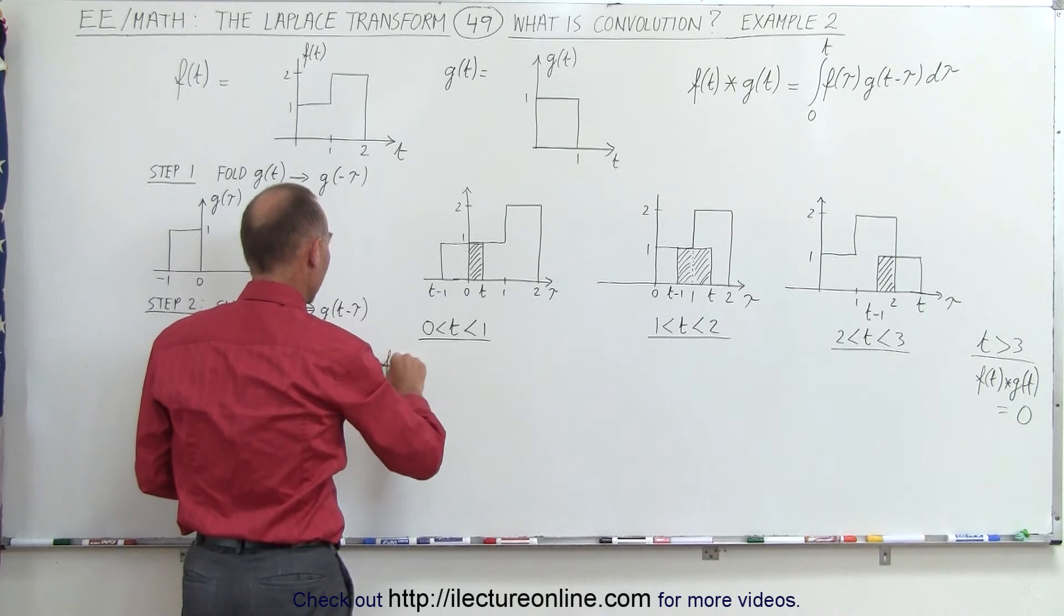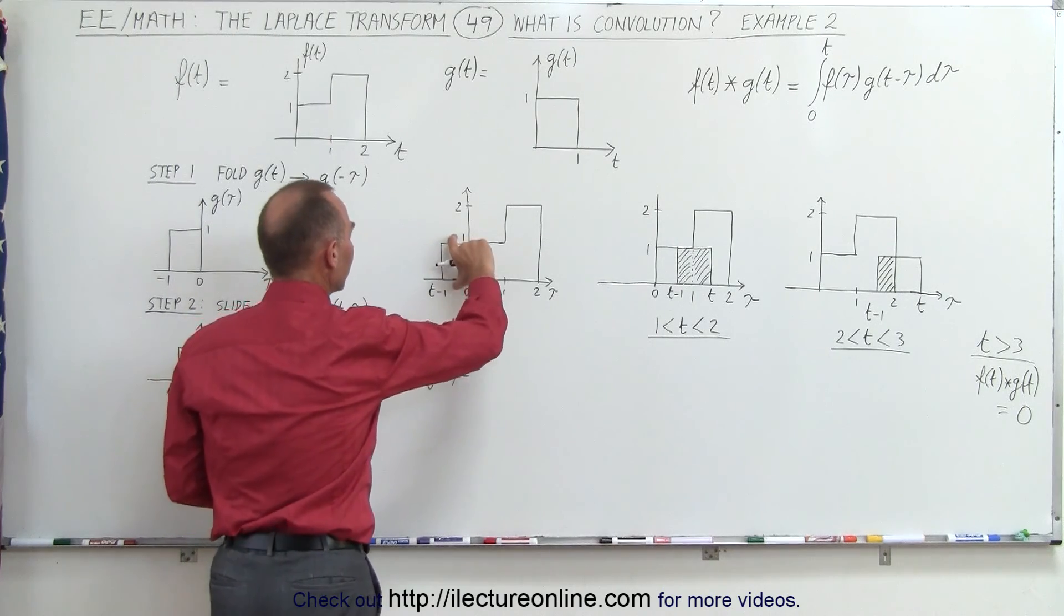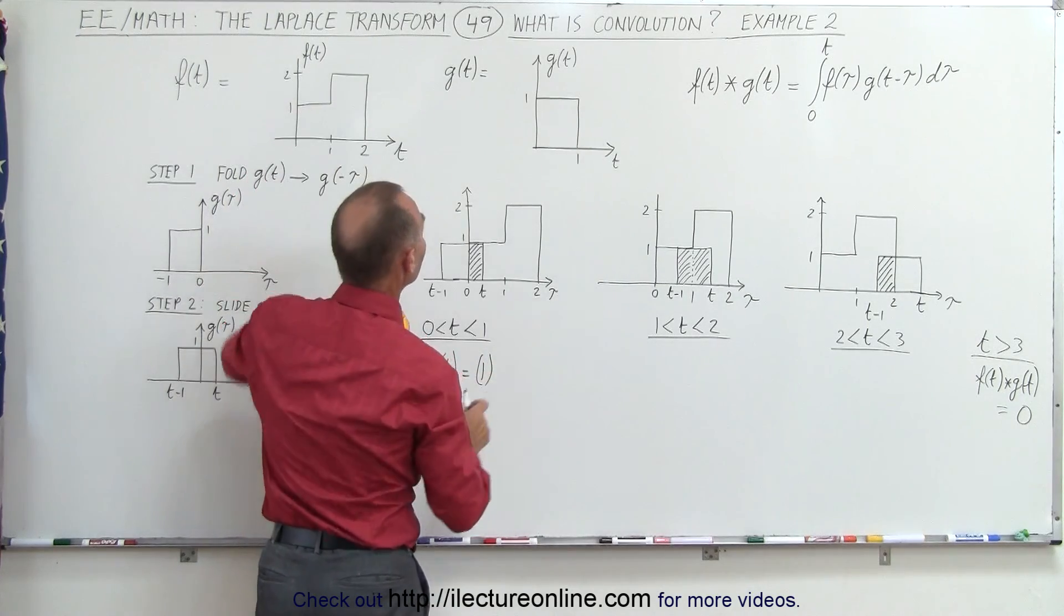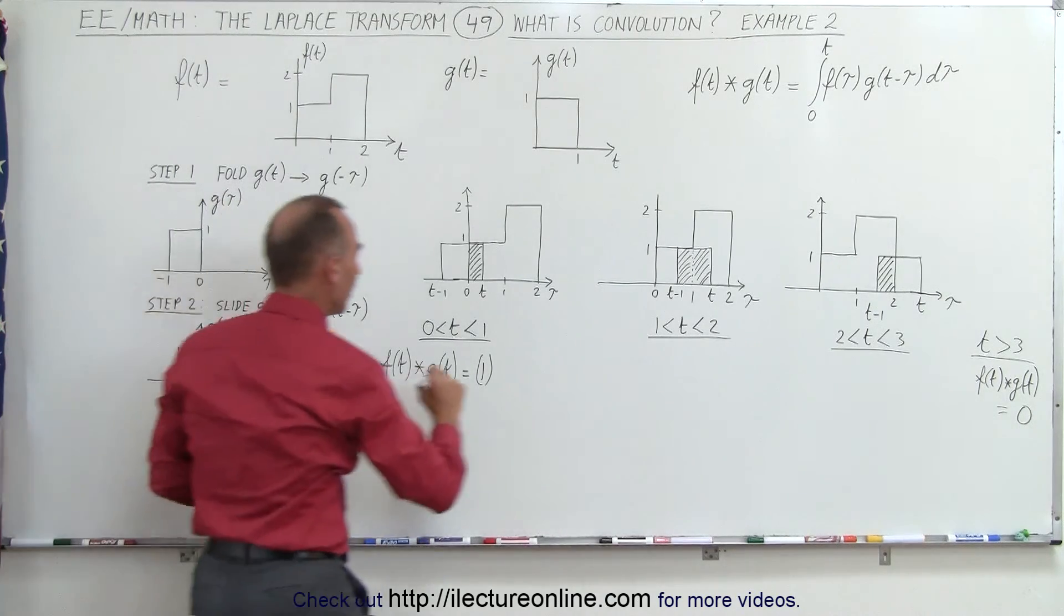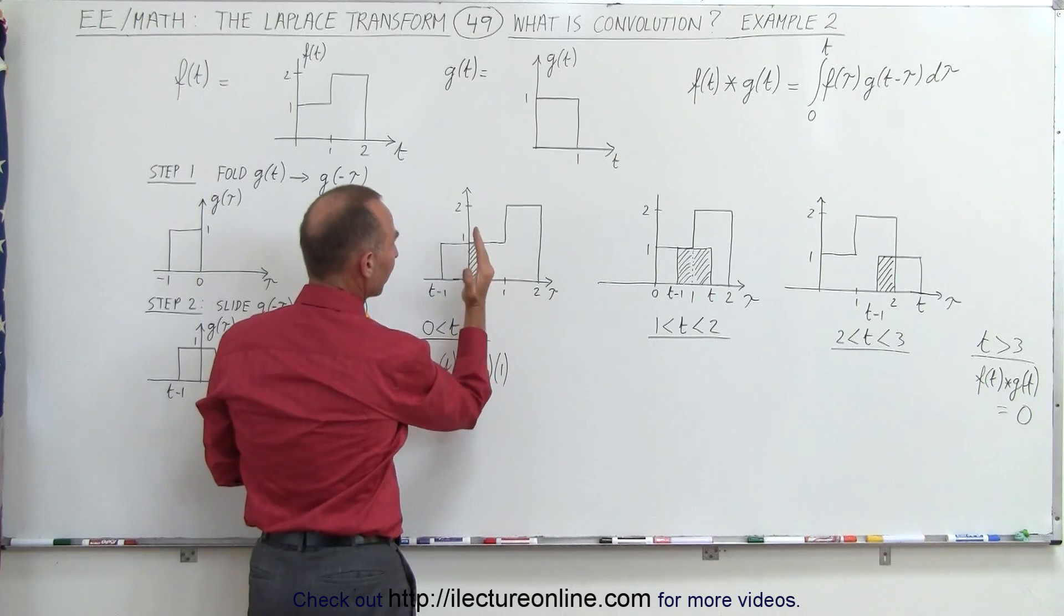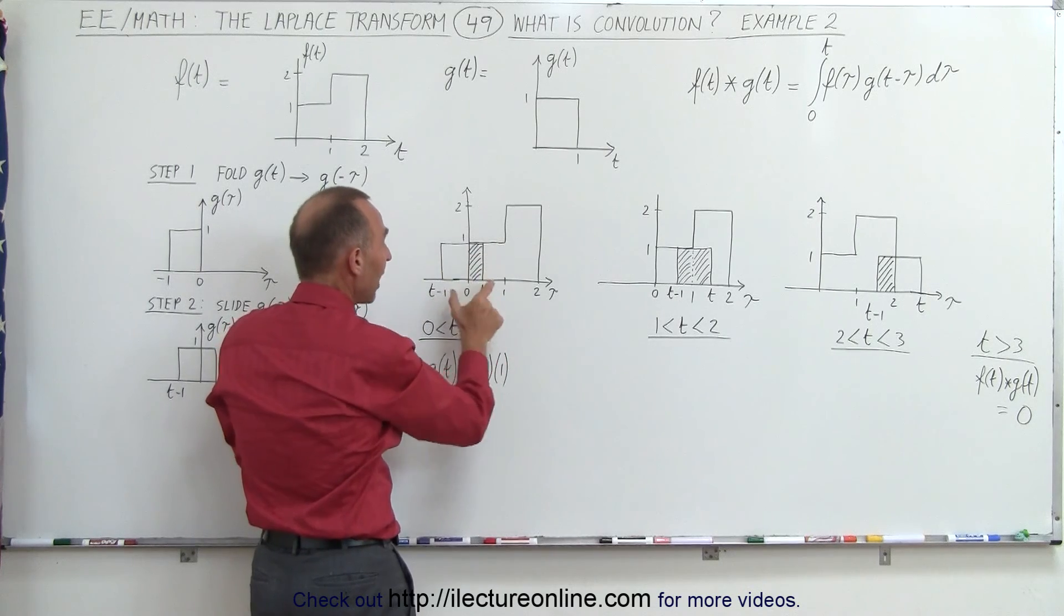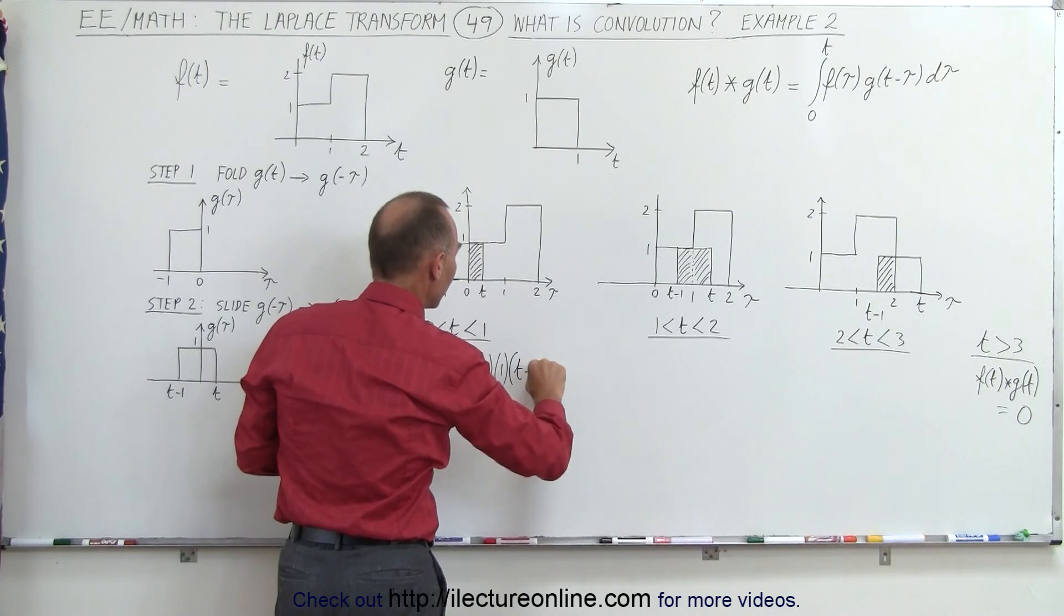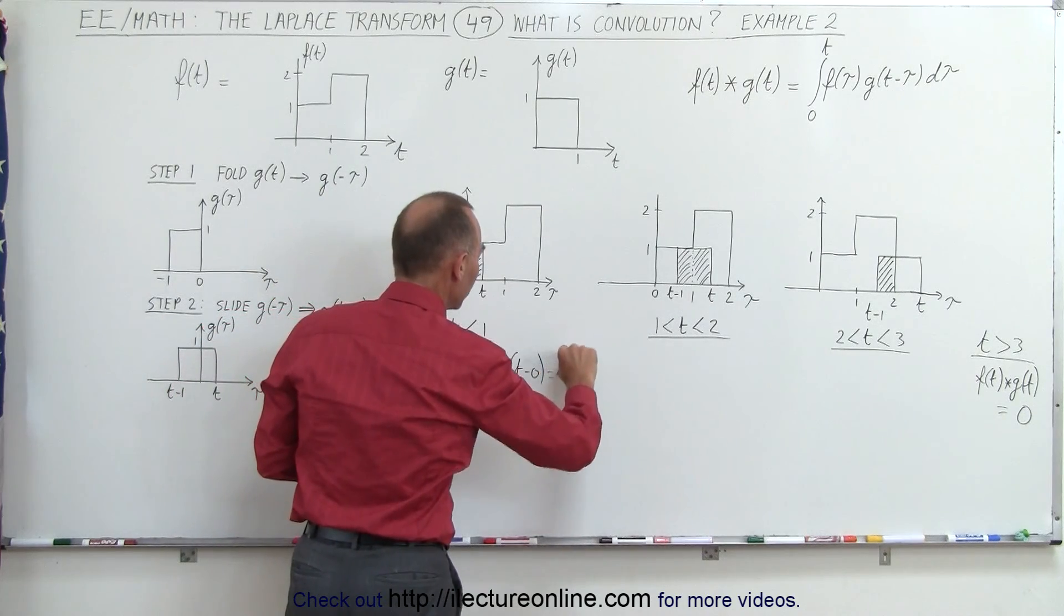So we can say here that f of t convolved with g of t is equal to the height of the first function, which is going to be f of t, which is going to be 1, times the height of the second function, which is the folded g of t, but that's also going to be 1, times the amount of the overlap. And the overlap is going to be the front part of the g of t, or I should say g of t minus tau, is going to be t minus 0, so it's going to be times t minus 0, which is the amount of the overlap. So 1 times 1 times t, it's simply equal to t.